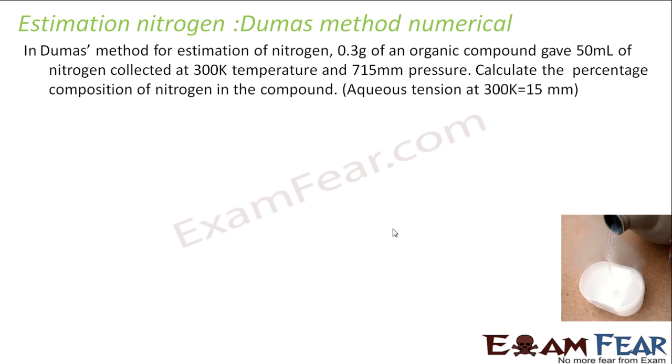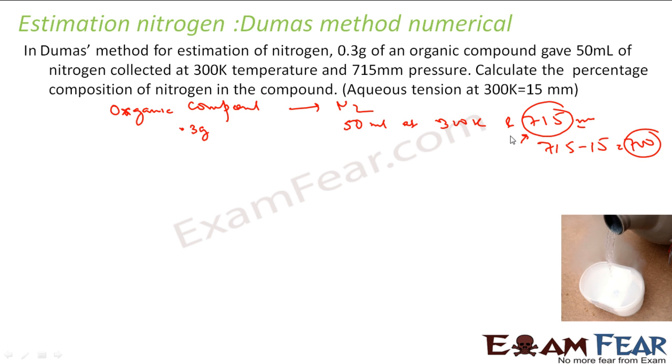Let's take one numerical on this Dumas method. It says that in Dumas method for estimation of nitrogen, 0.3 gram of nitrogen gave 50 ml of nitrogen. So I have my organic compound and from this I got nitrogen. This was 0.3 gram and this gave me 50 ml at 300 Kelvin and 715 mm pressure. And we have to find the composition of nitrogen and we are told that aqueous tension is 15 mm. So that means aqueous tension is 15 mm. So that means this pressure is not the actual pressure. So that means I am talking about 715 minus 15 mm, it is 700 mm. Because this 715 I am getting includes the aqueous tension. So the actual pressure I am talking about is 700 mm.